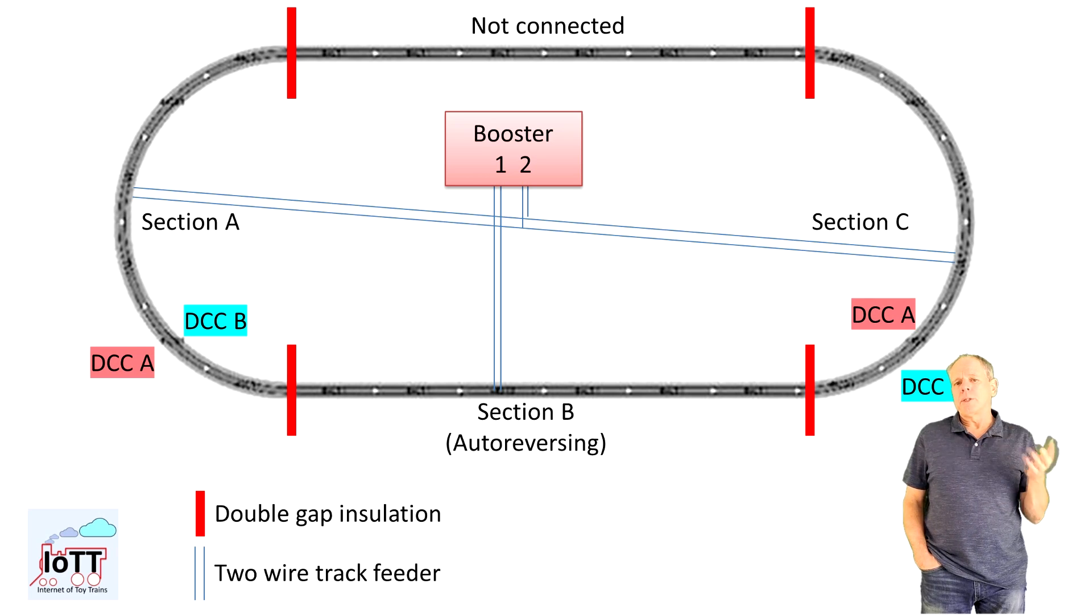As a result, when the locomotive travels from sector 1 to sector 3, the polarity of the middle section must be changed or a short circuit will occur when the locomotive bridges between two sections.